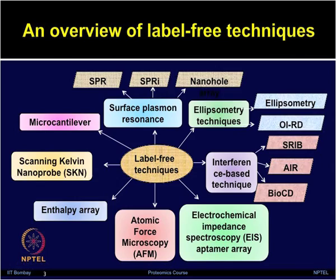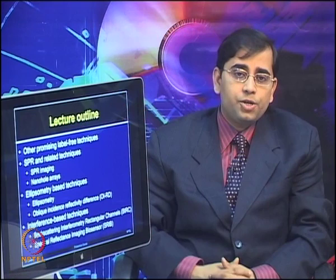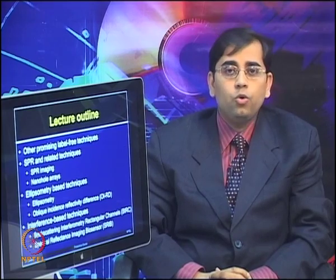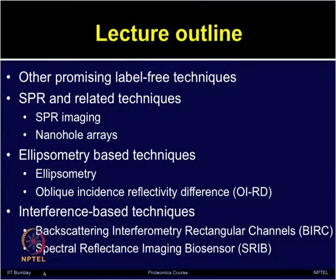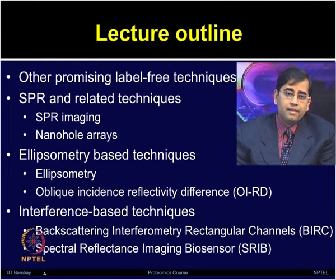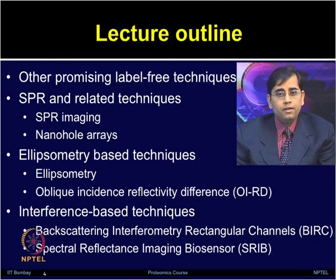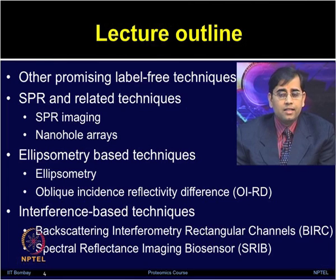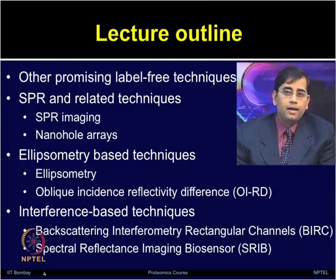Today, we will cover SPR imaging and nano hole arrays, then move on to ellipsometry based techniques including OIRD or oblique incidence reflectivity difference, and then talk about interference based techniques such as backscattering interferometry in rectangular channels or BIRC and spectral reflectance imaging biosensor or SRIB.